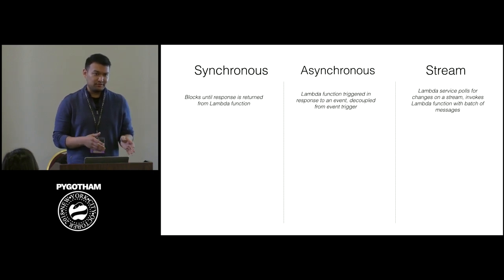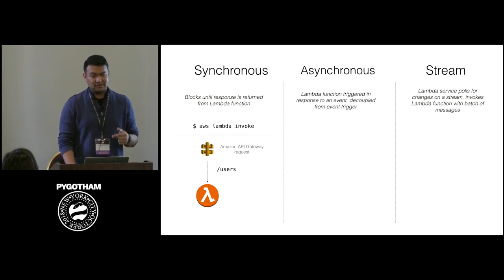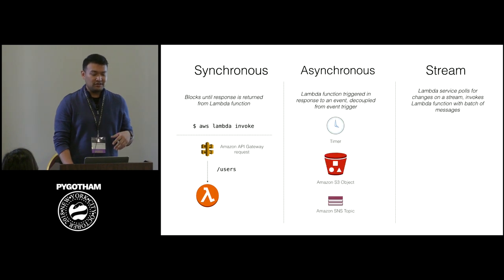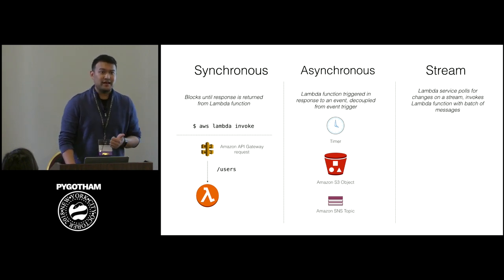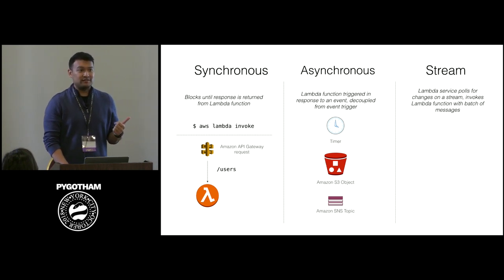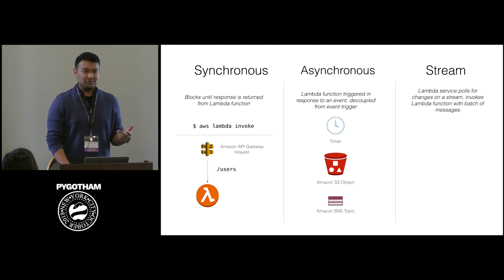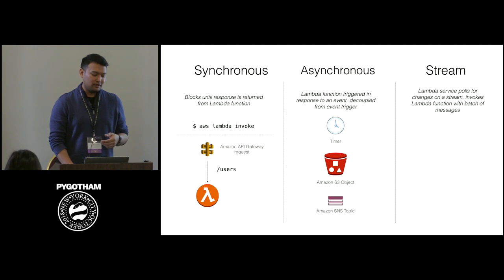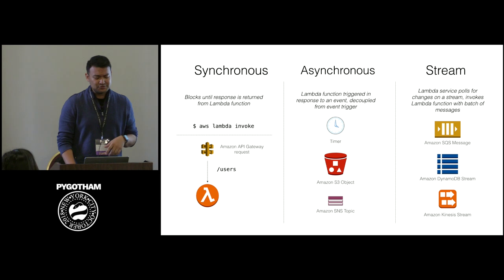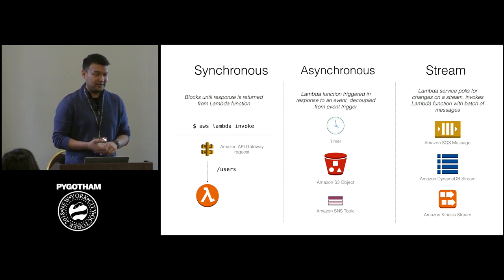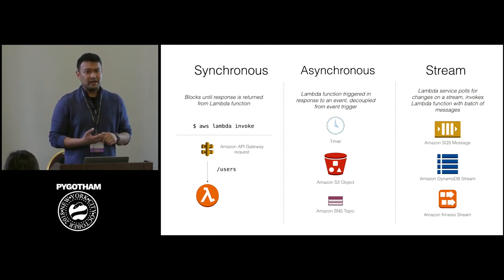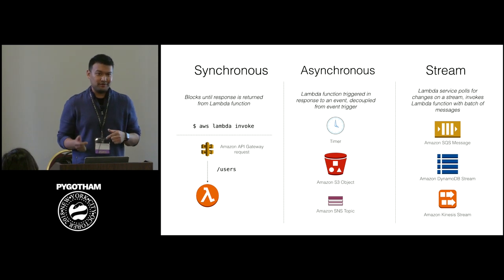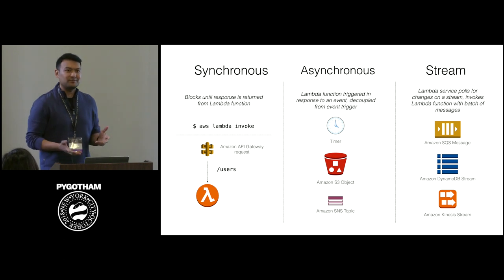To wrap up the three invocation types: synchronous uses the CLI or API Gateway to block until you get a result; asynchronous is event-driven — when something happens the Lambda fires and does processing on its own, including timer-based triggers like a cron service running every five minutes, or Amazon SNS integration; and streaming/polling where Lambda handles the polling for you. Additional streaming integrations include DynamoDB Streams — useful for database-style triggers — and Kinesis Streams. The concept is the same across all of them; just the specific configuration differs.